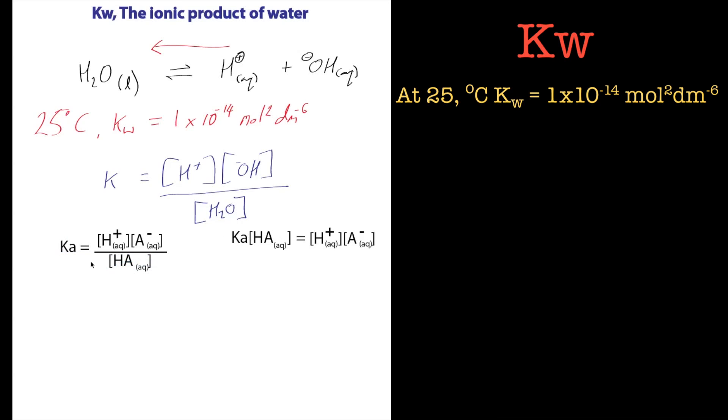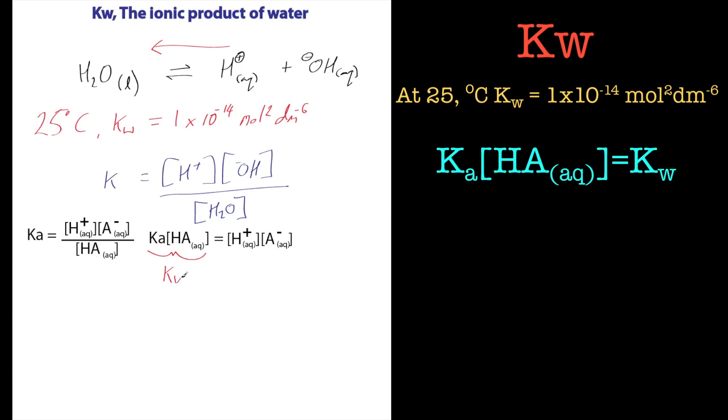Let's just get rid of that for now and rearrange the equation. Well, this here, this value, Ka times HA, has got a special name, and that's called Kw. So that is the ionic product of water, this value here. And basically, it just gives us an idea of the concentration of the acid and the concentration of the base, and it's called Kw.